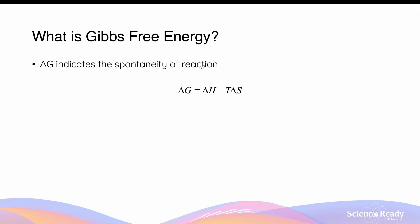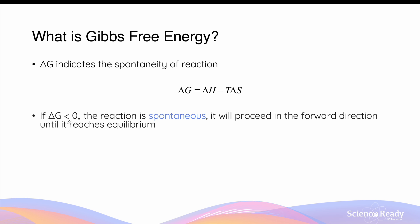This video is on Gibbs free energy and the concept of equilibrium. As you should have learnt from year 11 chemistry, Gibbs free energy indicates the spontaneity of a chemical process or chemical reaction. Gibbs free energy combines the enthalpy change of the reaction as well as the temperature and the changing entropy of the reaction. If the change in Gibbs free energy of a chemical reaction is less than zero — negative — then the reaction is spontaneous and will occur by itself without any intervention.